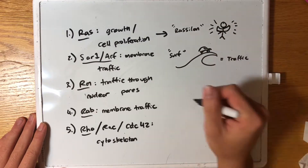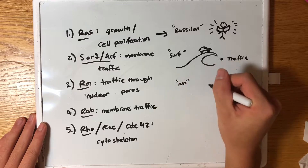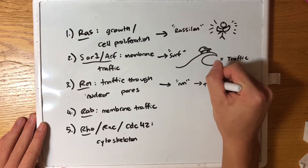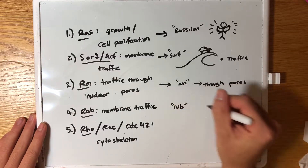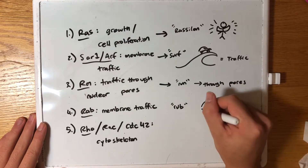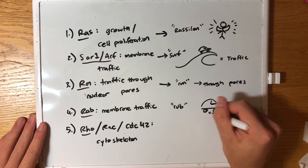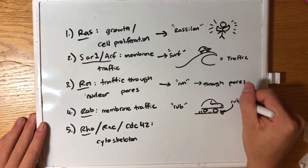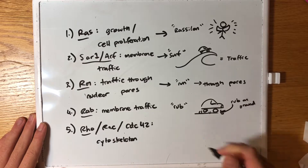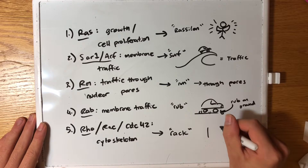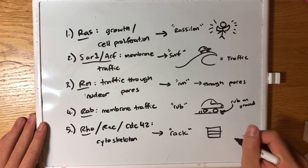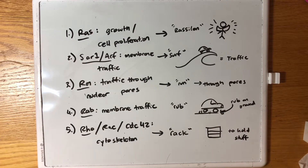I imagine a car for traffic surfing on top of a big wave. Ran is matched with the word 'run' — run through pores — representing traffic through nuclear pores. For Rab, I connect it to the word 'rub,' like a tire's wheel rubbing on the ground.